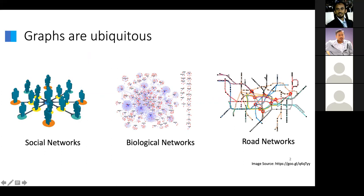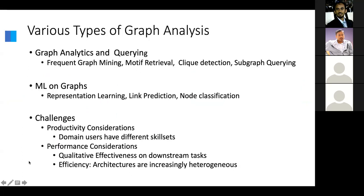The representation of choice for this talk is going to be about graphs. They are ubiquitous, both in their use and how they show up in natural as well as human-coupled systems. What I have listed here are a few examples from social, biological, and road networks. The types of analysis performed on these graphs are also wide and varied. On the one hand, there are operations that data scientists employ related to graph analytics and querying, such as frequent graph mining, motif retrieval, click detection, and subgraph querying.